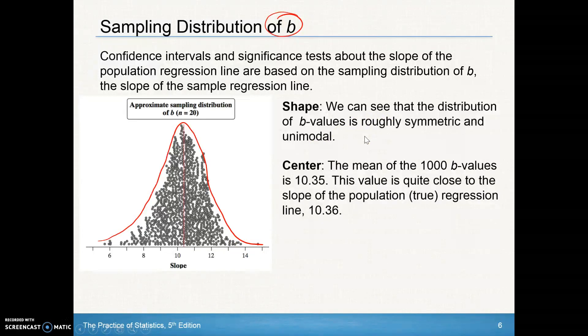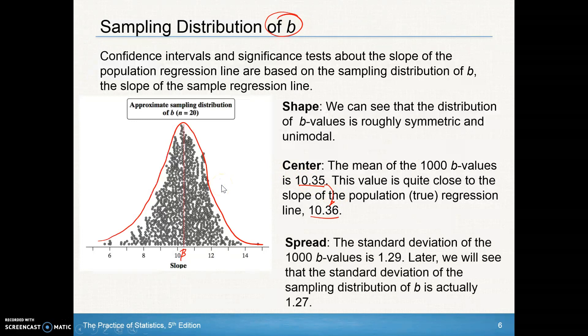The center should be, if you take many, many of these, should be very, very close to what that true population slope was. And in this example, they actually have 10.35, and the true one is 10.36. So that's a pretty darn good estimate. We're getting very close as we take more and more. Then our spread, the standard deviation of these 1,000 B values is 1.29. The standard deviation of the sampling distribution of B is actually 1.27. So you see we took 1,000 values, we're going to get pretty close the more and more we take.